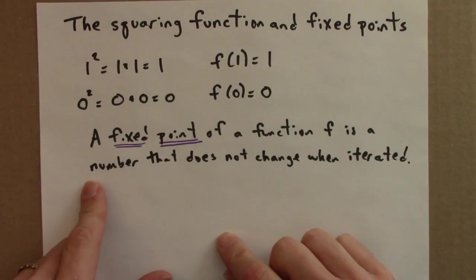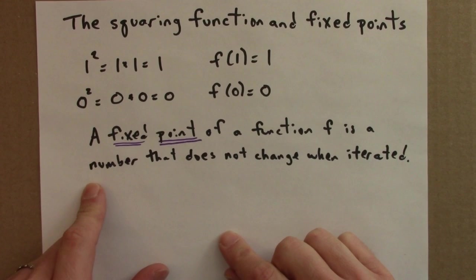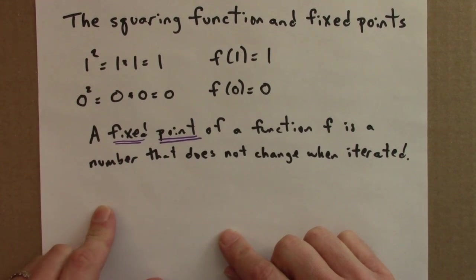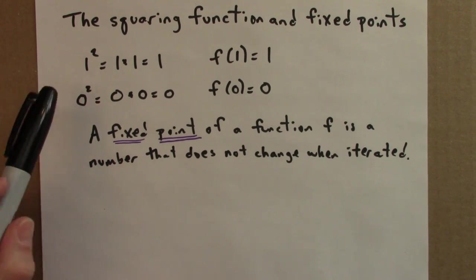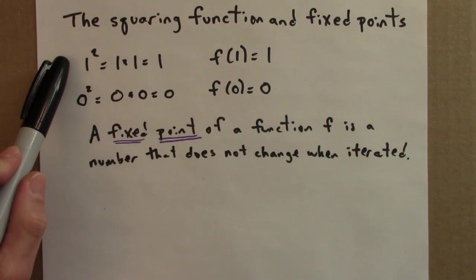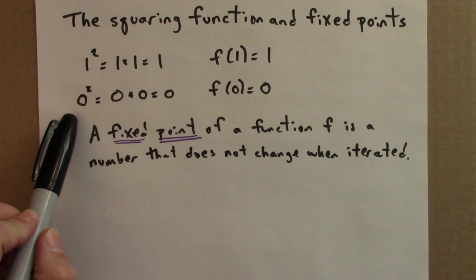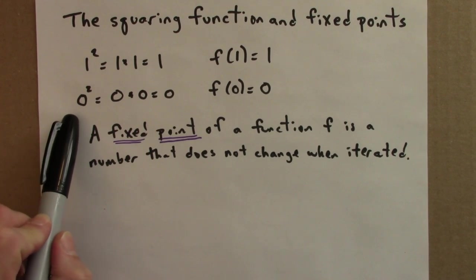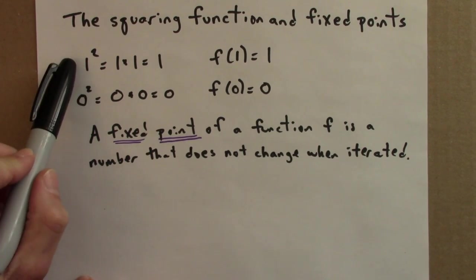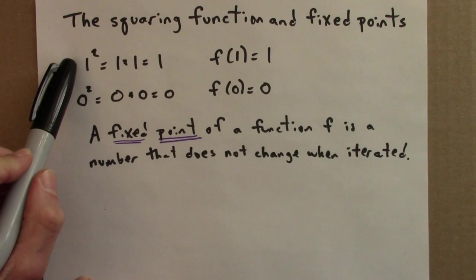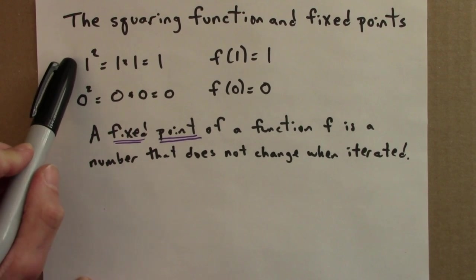A fixed point of a function f is a number that does not change when iterated. The squaring function has two fixed points: 0 and 1. Because 0 squared is 0 — input equals the output — and 1 squared is 1 — input equals the output.